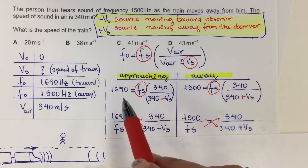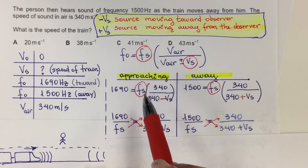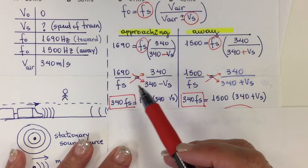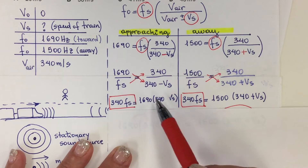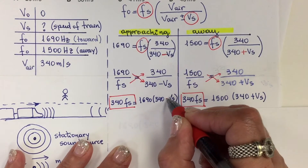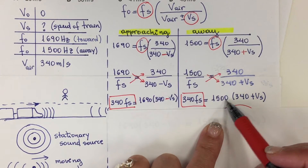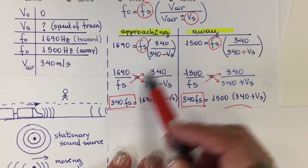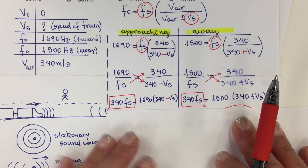Now in this step, I divide both equations by Fs — this over Fs and this over Fs — which cancels Fs on the right side of both equations. Then I perform cross multiplication. So it will be 340 times Fs equal to 1690 times the denominator with the negative sign, and likewise on the other side, 1500 multiplied by the corresponding denominator portion. Cross multiplication is an easy way to solve equations that have fractions on both sides.